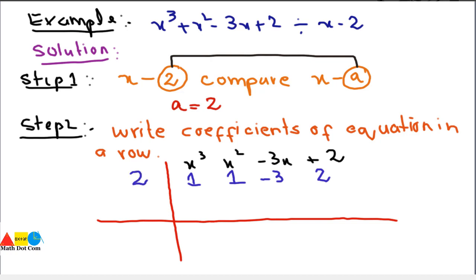In step 1 of the synthetic division process, write the first coefficient, which is 1, as it is. Then multiply this value by a, which is 2: 1 × 2 = 2. Write this 2 in the next position. Then add these two together: 1 + 2 = 3.